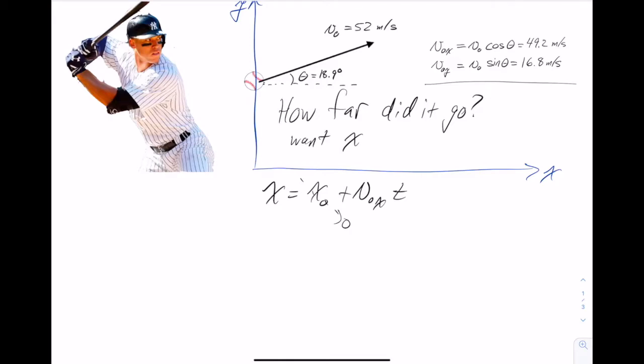And then our y0, we were told in the problem that the ball is one meter above the ground when he hits it. And we got the same starting conditions. The velocity has a magnitude of 52 meters per second at an angle of 18.9 degrees is the launch angle. And we have our initial velocity components broken down as we did in previous problems.